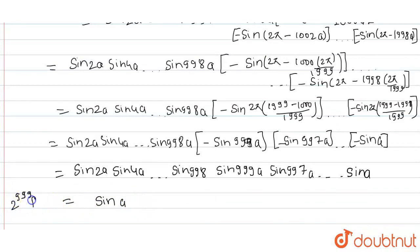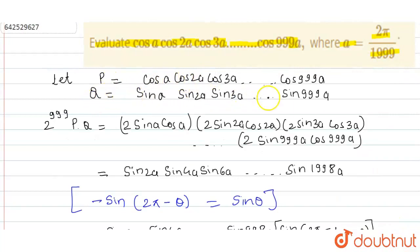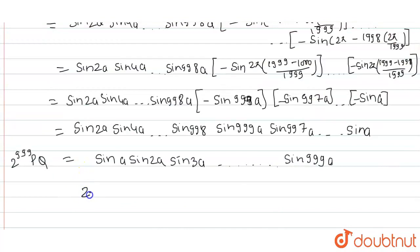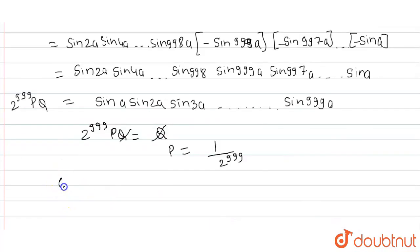We can say 2^999 P equals sin a sin 2a sin 3a up to sin 999a. This we already defined as Q. So 2^999 P equals Q, Q cancels, so P equals 1 upon 2^999. And P is cos a cos 2a cos 3a up to cos 999a, which equals 1 upon 2^999. That's the answer. Thank you.